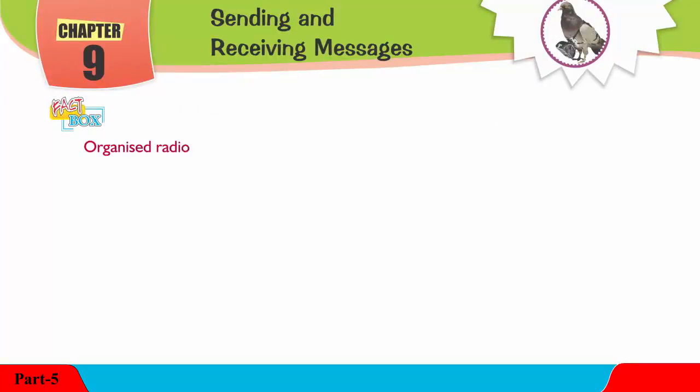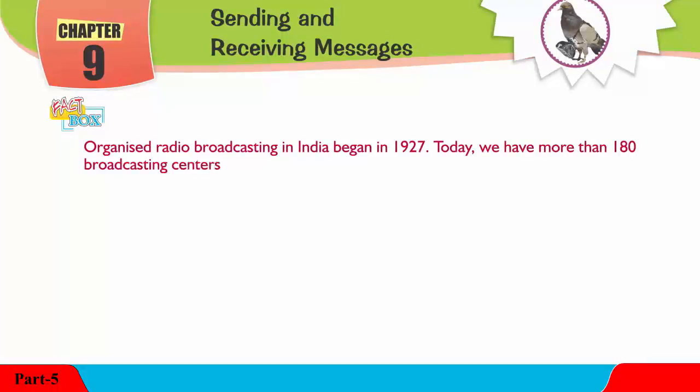Fact Box: Organized radio broadcasting in India began in 1927. Today, we have more than 180 broadcasting centers of All India Radio.